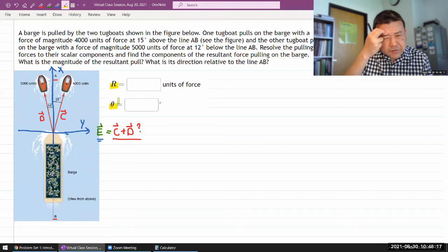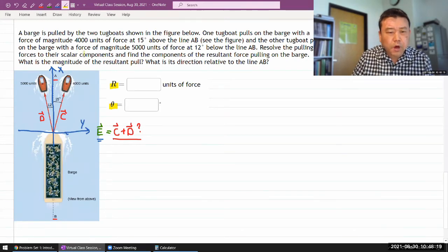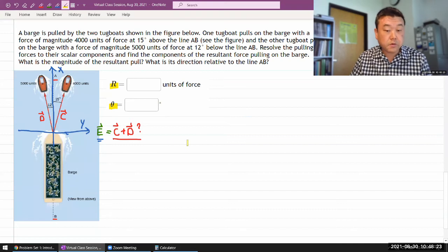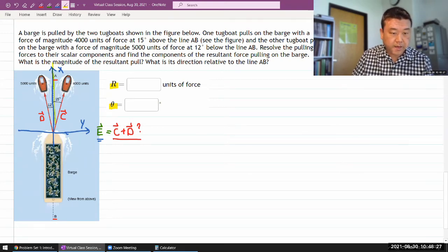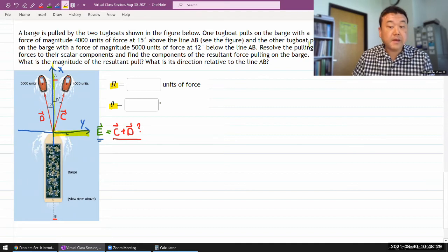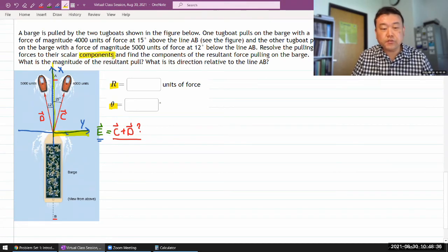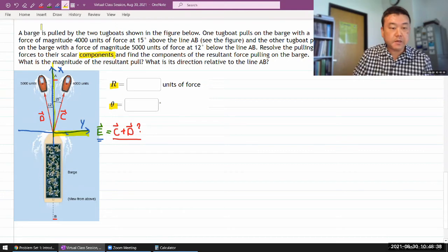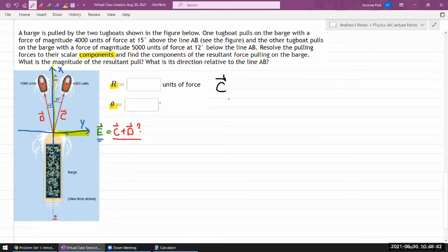Looking at this, I can't quite tell if it's going to go above or below, so let me just do the calculation. First, I need to resolve the pulling forces to their x and y components. So I need to say, alright, my vector C—I'm given this angle here—so my x-component is going to be the magnitude.